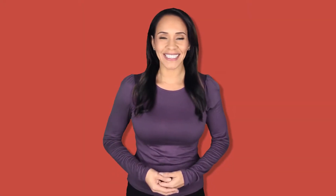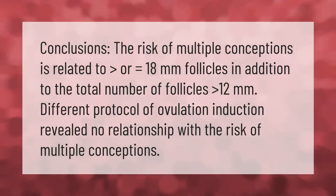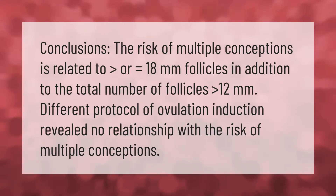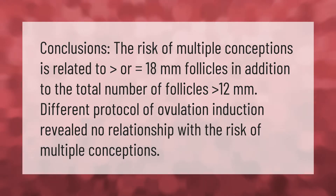Conclusions: the risk of multiple conceptions is related to follicles greater than or equal to 18 millimeters, in addition to the total number of follicles greater than 12 millimeters. Different protocols of ovulation induction revealed no relationship with the risk of multiple conceptions.